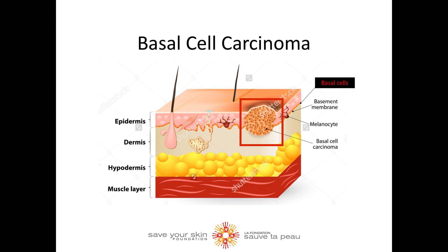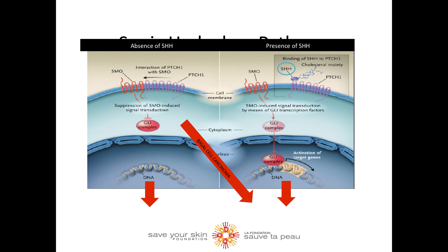Now let's look at the molecular level of BCC. There are a few key molecules that play a role in basal cell carcinoma. The Sonic Hedgehog pathway is an important molecular pathway involved in BCC. Sonic Hedgehog is a molecule that plays an important role in embryonic development, but in adults this pathway is important to control cell division — telling cells when they need to divide and when they don't.